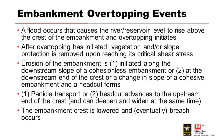The sequence of events that lead to an embankment failure from overtopping: a flood occurs that causes the reservoir level to rise above the crest of the embankment and overtopping initiates. After overtopping has initiated, vegetation and/or slope protection is removed upon reaching its critical shear stress. Erosion is initiated along the downstream slope of a cohesionless embankment, or at the downstream end of the crest or a change in slope for a cohesive embankment, and a head cut forms. Then particle transport or head cut advances to the upstream end of the crest, deepens and widens, the embankment is lowered, and eventually breach occurs.